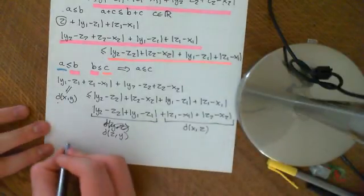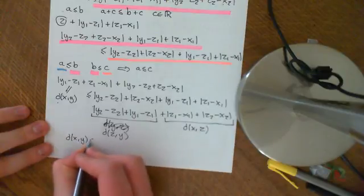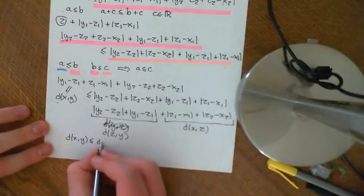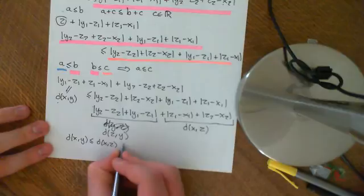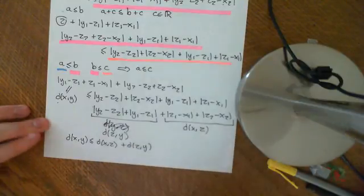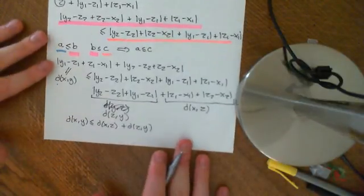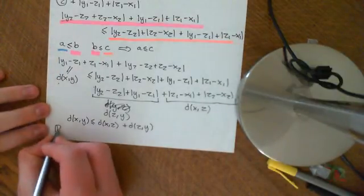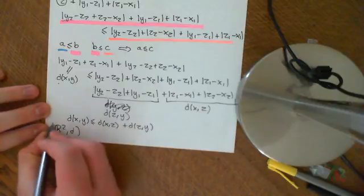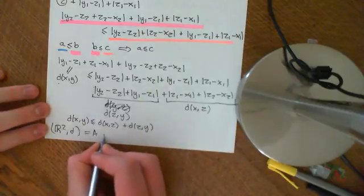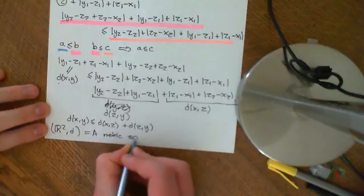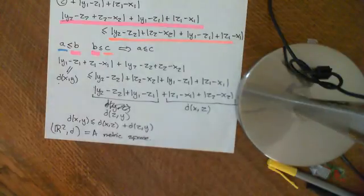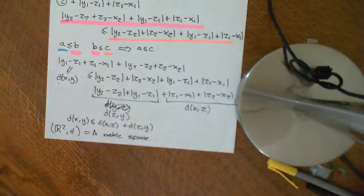Okay, so basically what I end up with is that the distance between x and y is less than or equal to, swap these around, distance between x and z plus the distance between z and y. Okay, so that's why it obeys the triangle inequality. So basically what we have seen is that R2 with this other metric forms a metric space. So that is another way of equipping this same set with a different metric. So it's not like that you have one set and there's only one metric it can possibly take. There are many, many different metrics it can take.